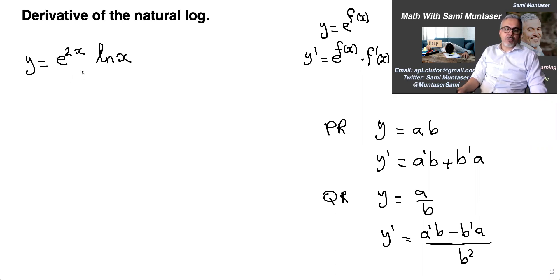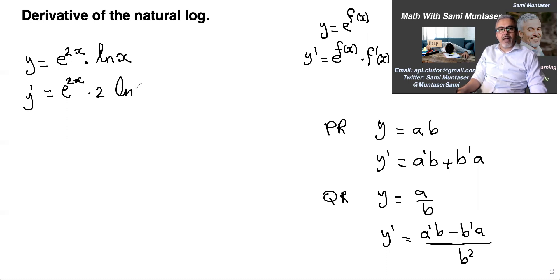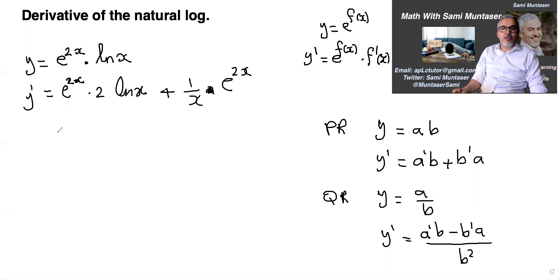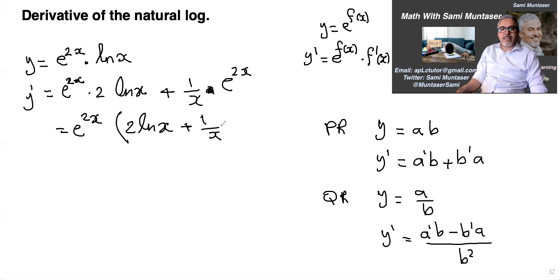Here we have e to the 2x times ln x — a product. So it's a prime: e to the 2x times the derivative of 2x, which is 2, multiplied by ln x — that's b. Plus the derivative of ln x, which is 1 over x, times e to the 2x. We then factor out e to the 2x as the greatest common factor, and we end up with e to the 2x times (2·ln x plus 1 over x). That's the answer.